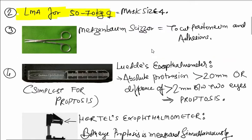LMA, laryngeal mask airway. If patient's weight is 50 to 70 kg and female, then mask size will be 4.